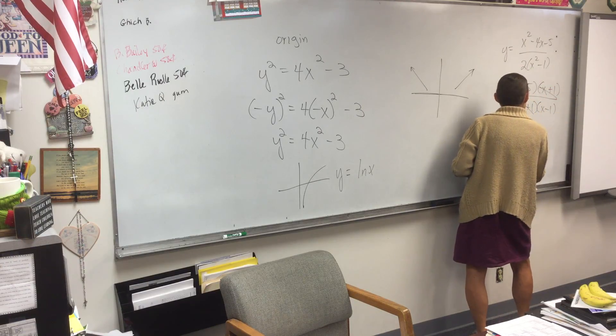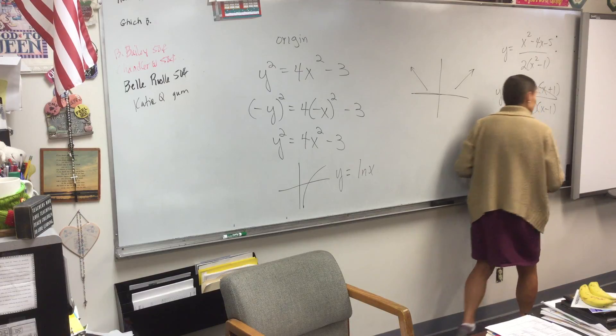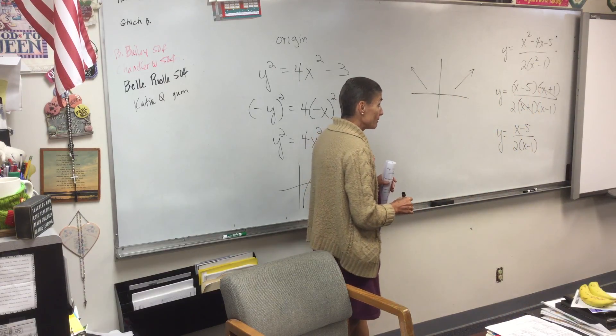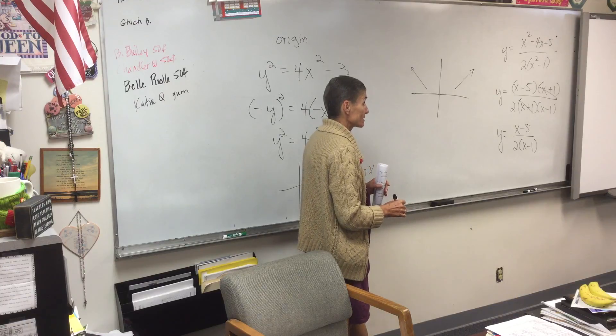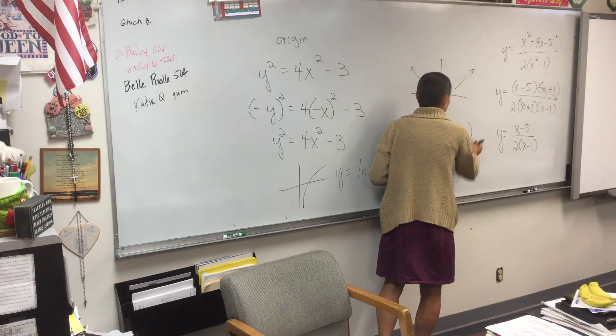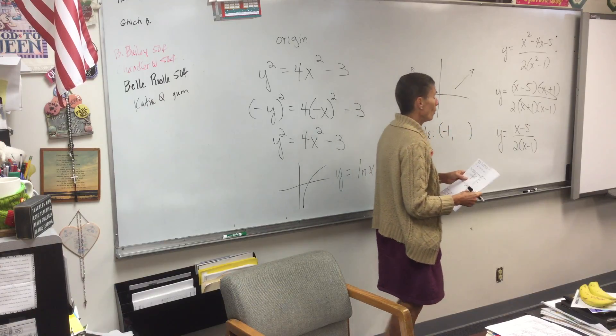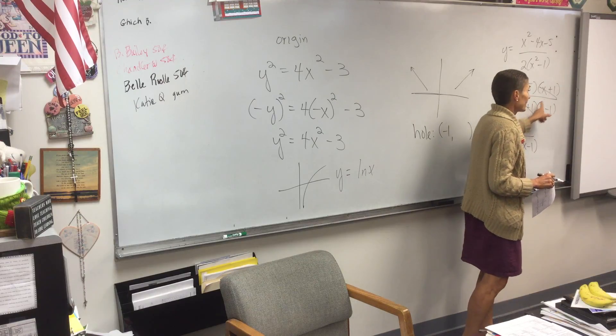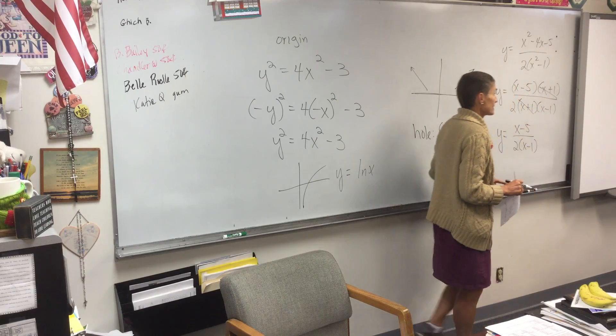Which simply means we're going to have a hole. Not everything is going to have a hole. Right? You're only going to have a hole if you can cancel. Where will the hole be? Negative 1. Where X is negative 1. And why is the hole at X equals negative 1? Because that's the factor that I cancel.